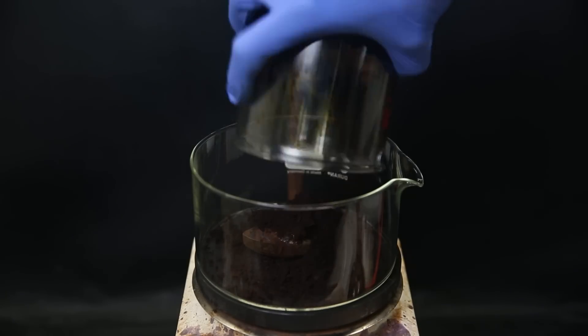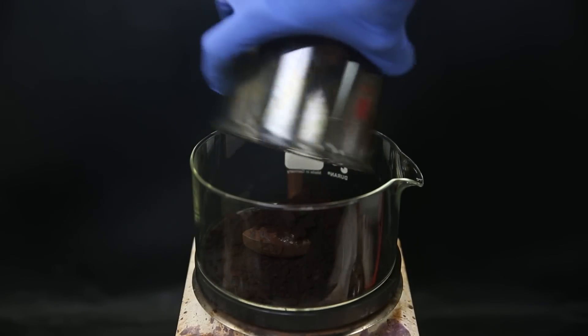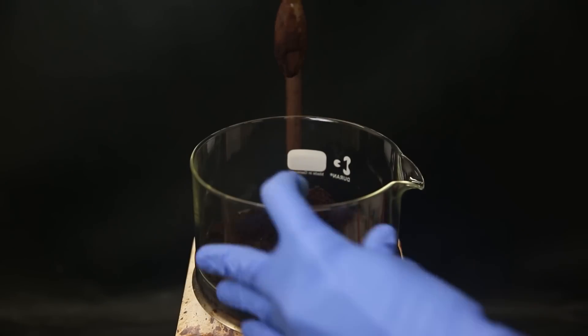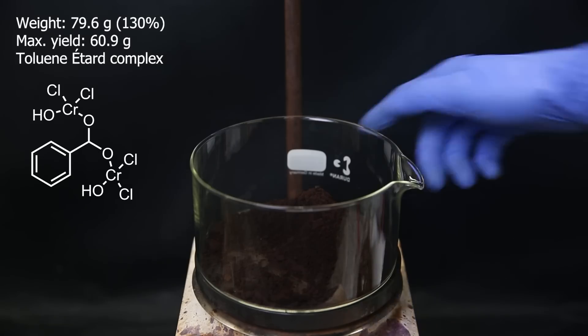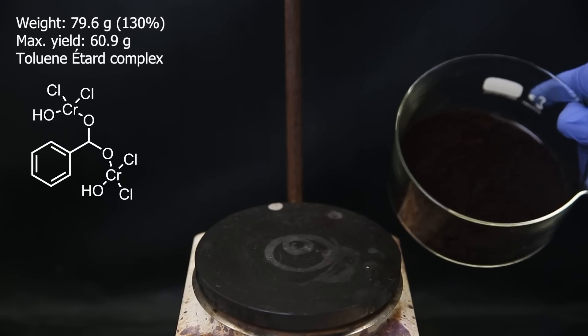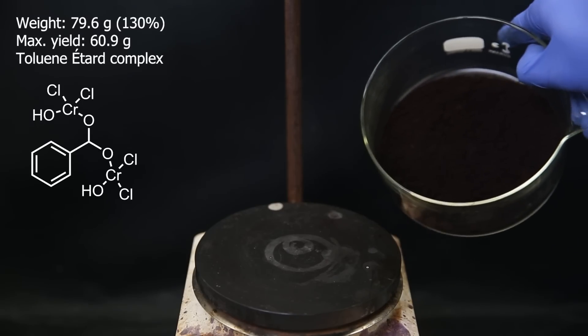The product just looks like dirt, and it also fumes a bit. There's probably still some unreacted chromochloride soaked into the solid, as well as carbon tet, which also explains why the weight is more than the maximum possible yield. Nile didn't show its yield for this step, but it doesn't really matter if it's still wet.